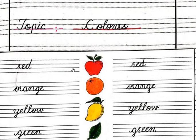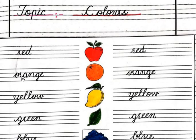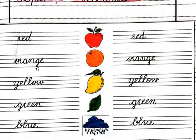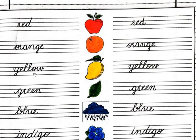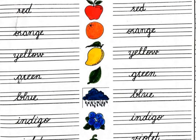You have to write the colors name in the sequence. Number 3: Yellow — Y, E, double L, O, W — yellow. Number 4: Green — G, R, double E, N — green.